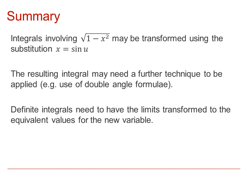In summary, integrals involving 1 minus x squared can be transformed using the substitution x equals sin(u). The resulting integral may need extra techniques — for example, the double-angle formula when we have cos²(u). For a definite integral, remember to transform the limits, which then allows you to evaluate directly. For an indefinite integral, you must back-substitute to express the answer in terms of x.